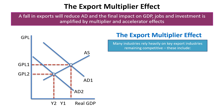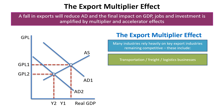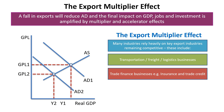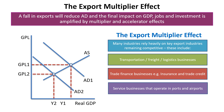Many industries rely heavily on key export industries remaining competitive. These include industries such as transport, freight, logistics, trade finance businesses, insurance, trade credit, and all the service industries that operate in ports and airports. It is very likely that a fall in exports will ripple out through the whole economy, having a much bigger overall impact on GDP, jobs and investment.